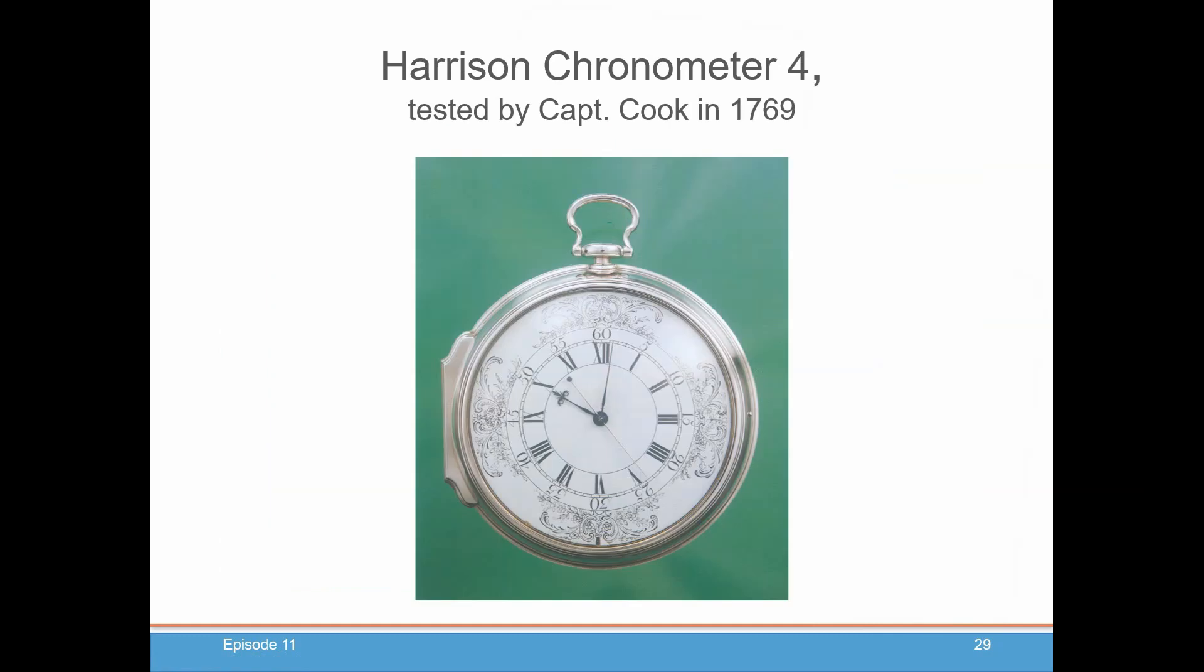The chronometer that actually won the Longitude Prize and tested by Captain Cook in 1769 was Harrison's chronometer number four, which as you could see, was very portable. I believe this was about sort of like a wall clock size. They actually have copies of this at the Greenwich Observatory if you ever get a chance to go there and see it.